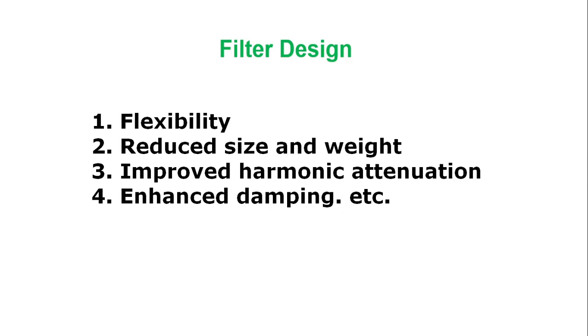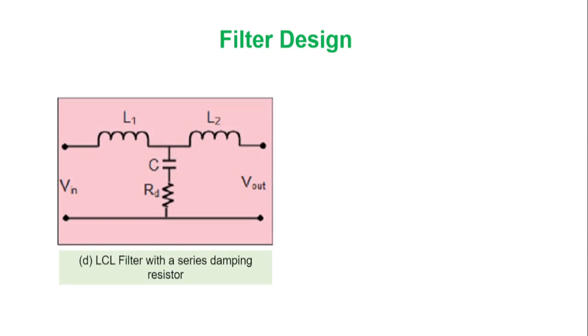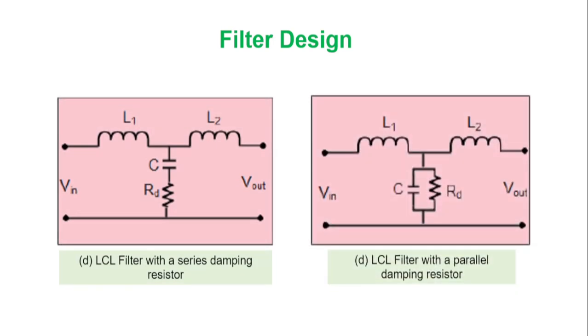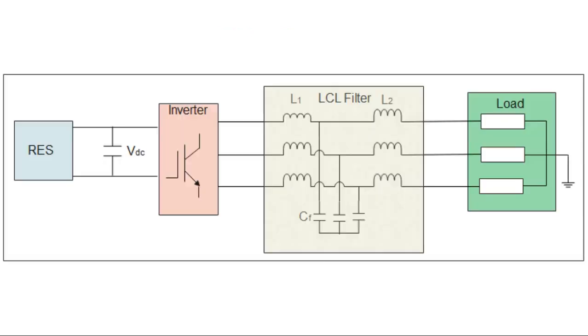To attenuate the possible resonance caused by high order power filter harmonics near the resonant frequency, it may be damped by shunting a resistor to a capacitor or connecting it in series with a shunted capacitor.